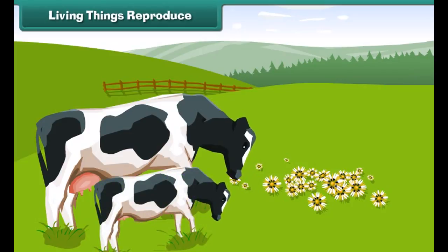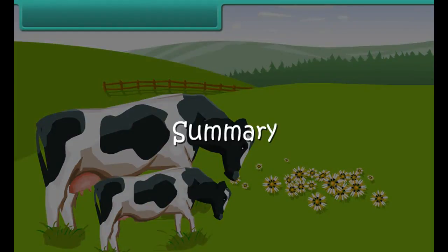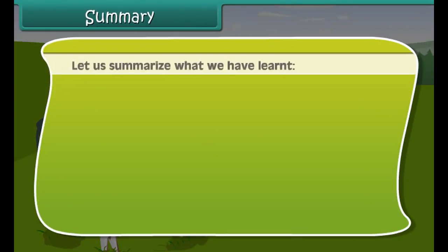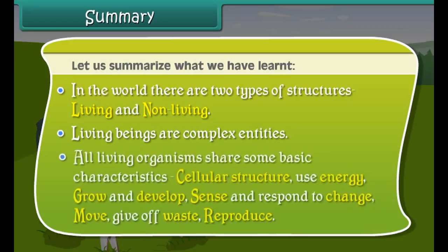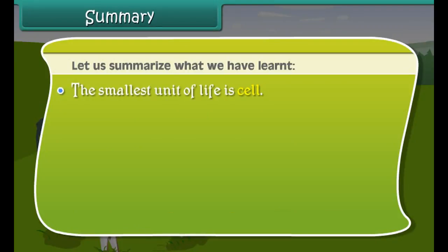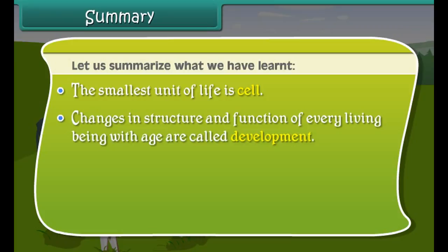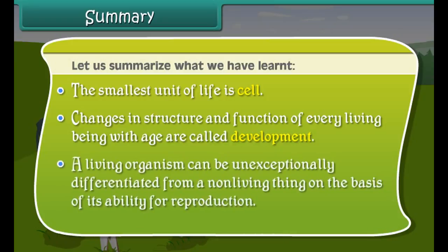Let us summarize what we have learned. In the world there are two types of structures: living and non-living. Living beings are complex entities. All living organisms share some basic characteristics: cellular structure, use energy, grow and develop, sense and respond to change, move, give off waste, and reproduce. The smallest unit of life is the cell. Changes in structure and function of every living being with age are called development. A living organism can be unambiguously differentiated from a non-living thing on the basis of its ability for reproduction.